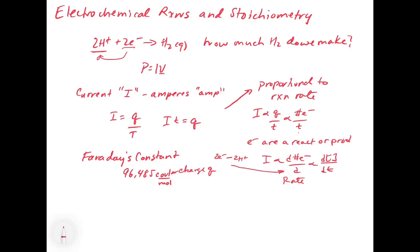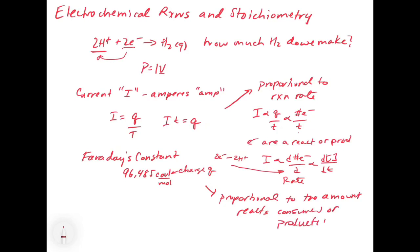The other thing to think about is that current is proportional to the amount of reactants consumed or the products made. If we run a current for a given amount of time, we can get the charge. If we know the charge, we know Q is proportional to the number of electrons, and the number of electrons is proportional to the concentration. So we can calculate the amount of product made over a given period of time.